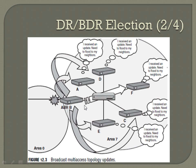For example, if router A is the designated router and the link to router B goes down, router B sends a message to A to report that. A then tells each of the other individual routers. Rather than router B spamming every router and every router subsequently spamming the same message out to every other router, you've got just two instances of that happening.